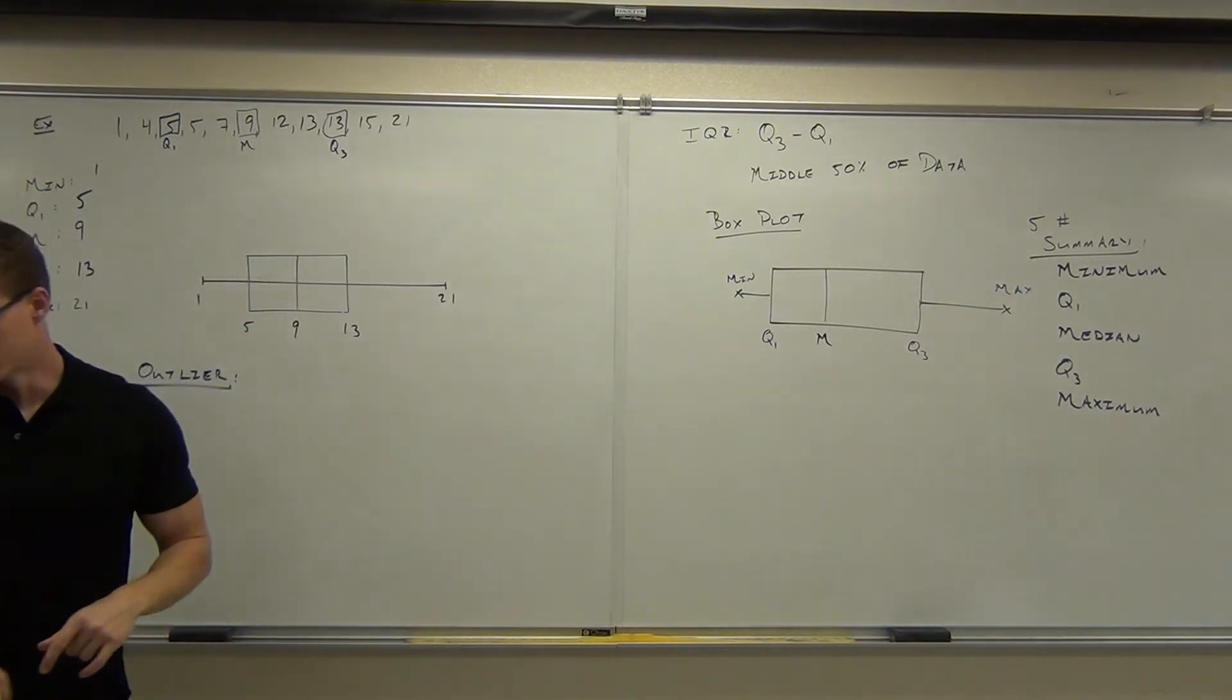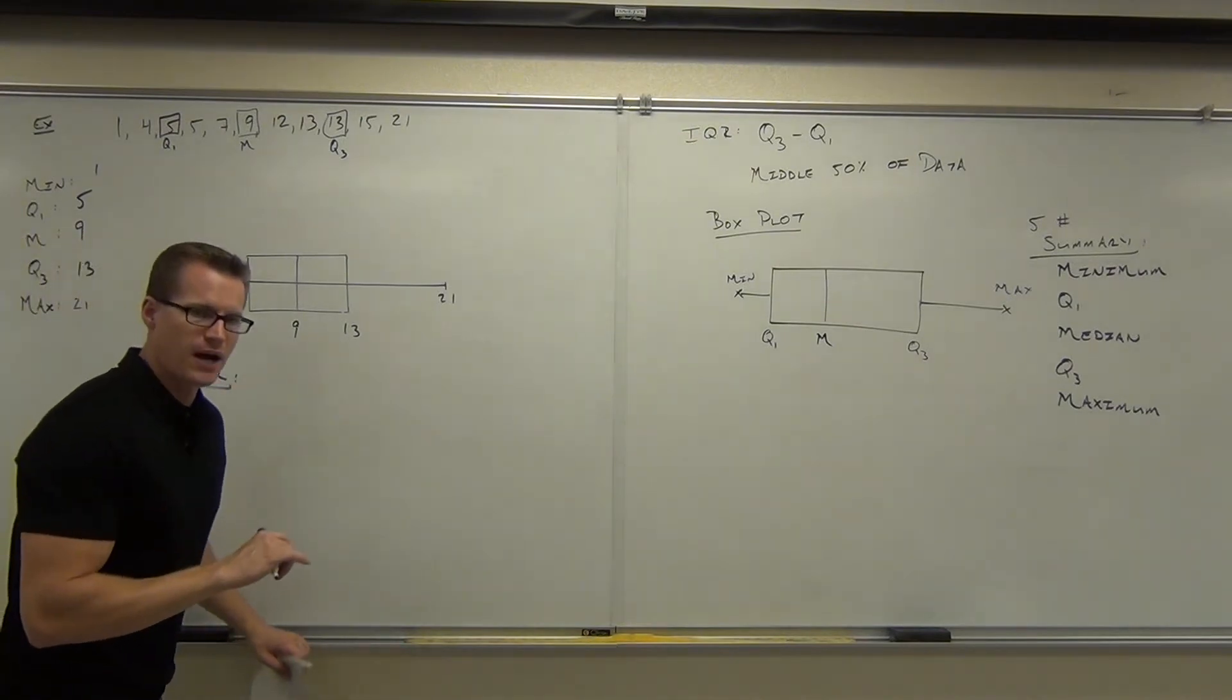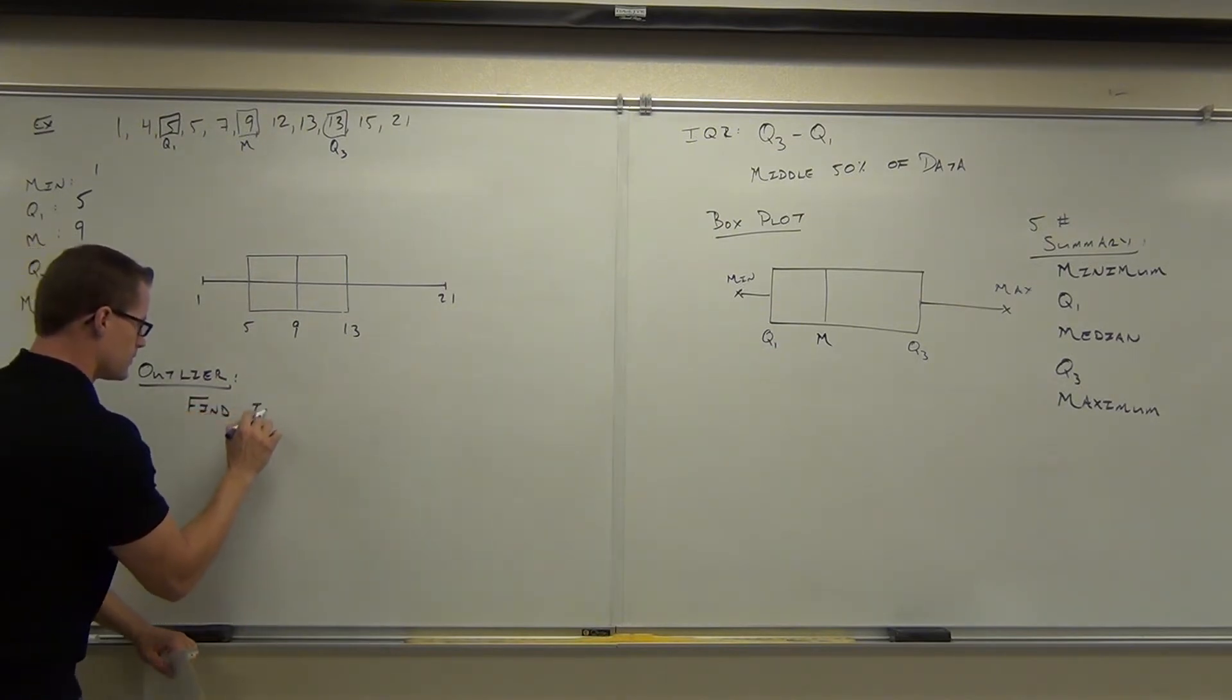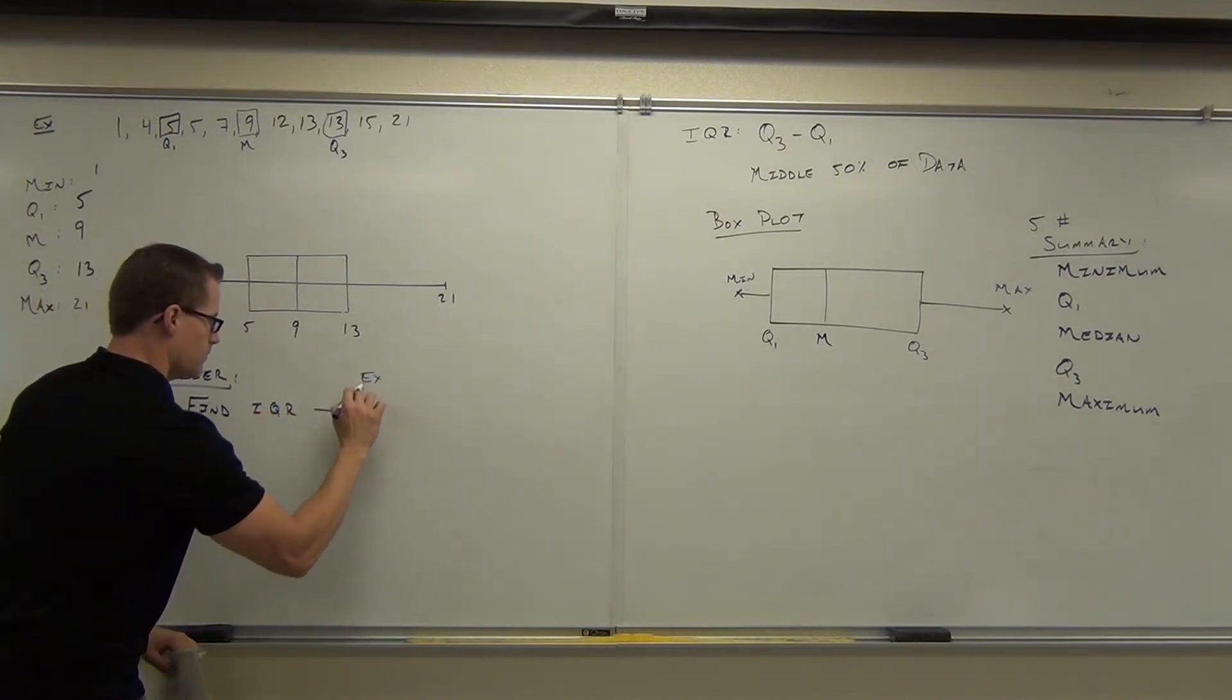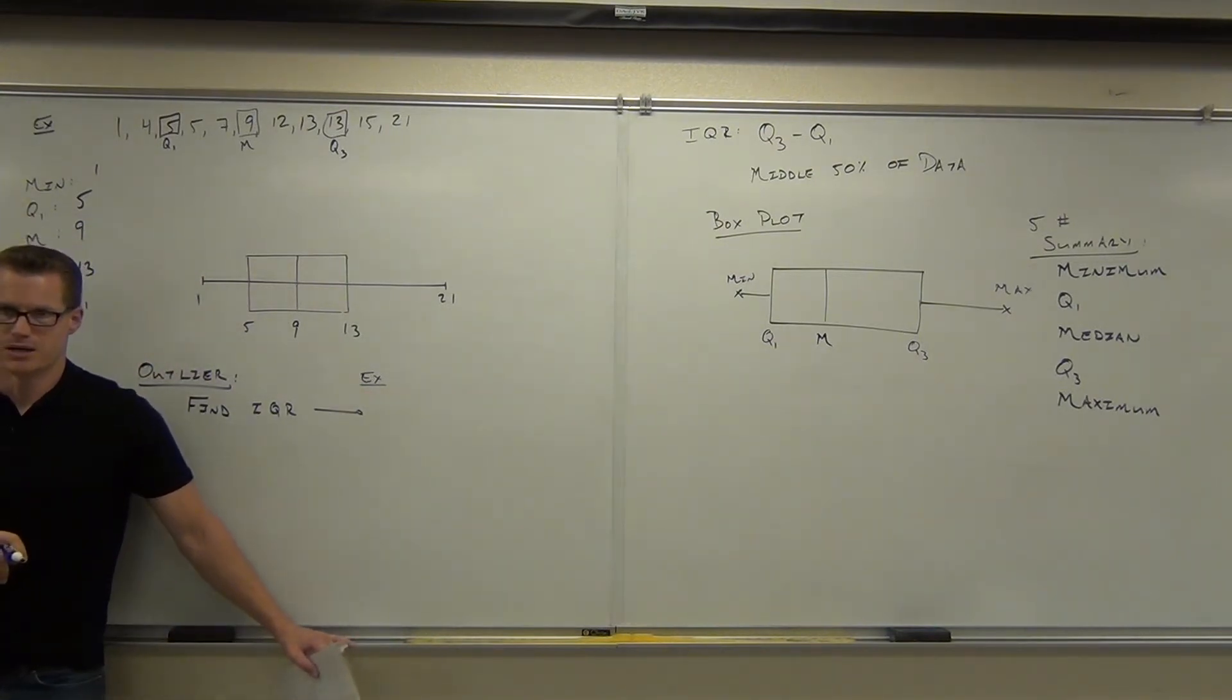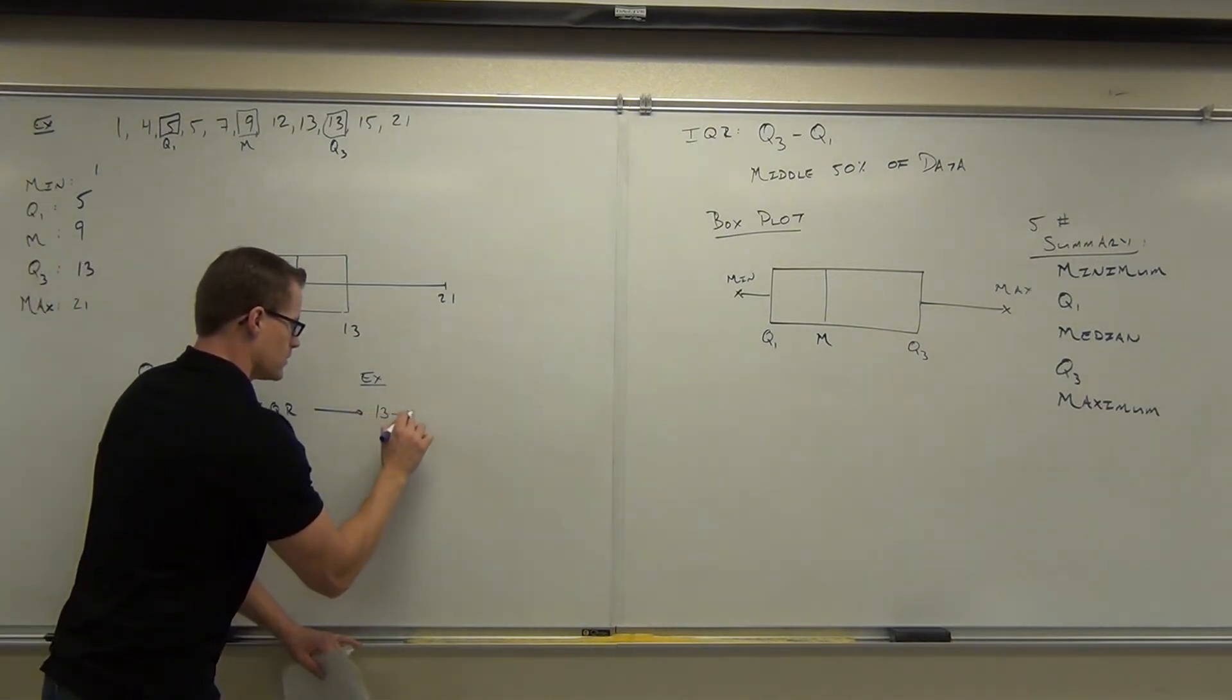In order to figure out an outlier, you just have to do two things. The first thing is find the IQR. In our example, can you find me the IQR? What is the IQR? The IQR is 8.